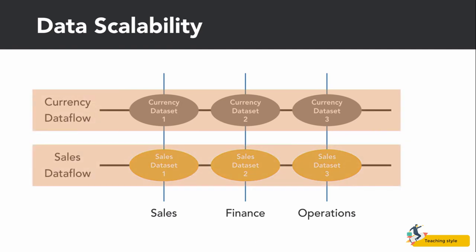What if they instead combined efficiencies by connecting to the same sales and exchange rate data, then scaled the data to meet their department needs? They consolidate the ETL process for the shared data into two data flows — one for the sales data and another for the currency exchange rate data — which significantly shortens the ETL process for their own datasets.